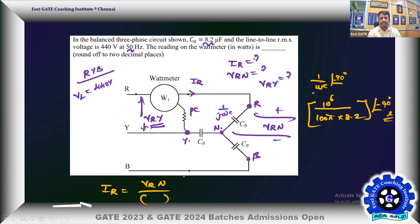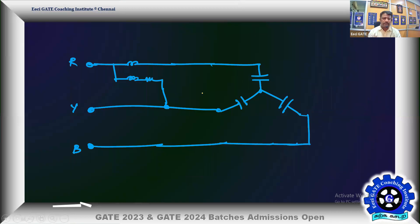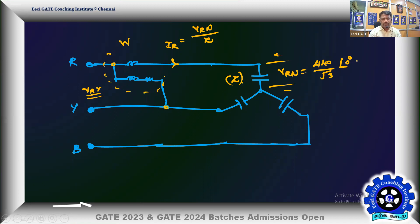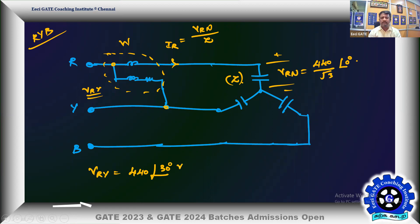The current I_R is in the current coil and we are looking for V_RY in the potential coil. V_RN equals 440/√3 at an angle 0 degrees. V_RY: since the line voltage is 440 V and taking R as the reference phasor in RYB sequence, V_RY equals 440 at an angle 30 degrees.